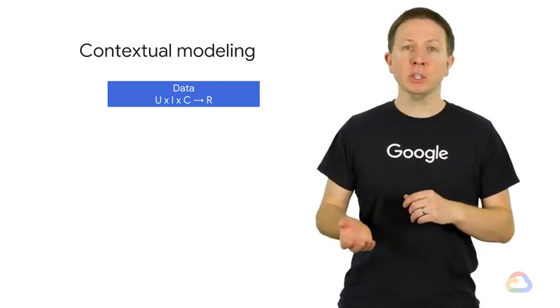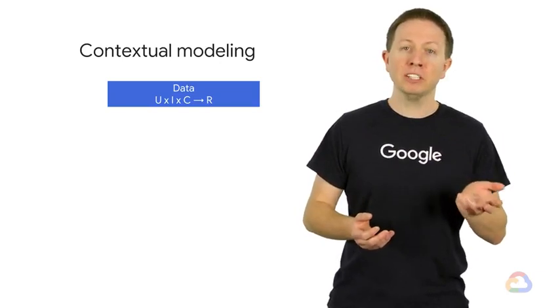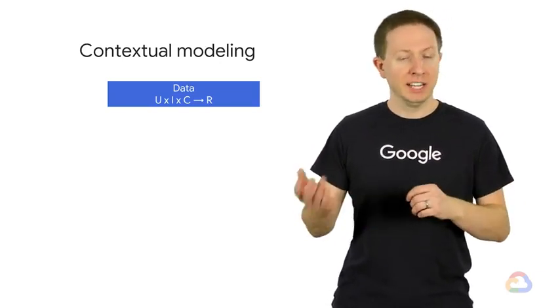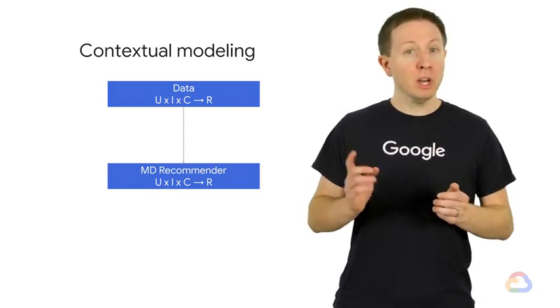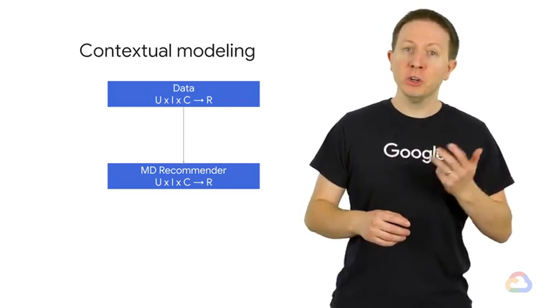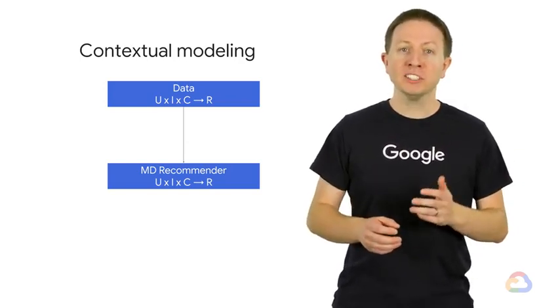Just like the other two types of context-aware algorithms, contextual modeling begins with our user by item by multi-dimensional context tensor containing ratings. This data goes directly to our recommender, but notice this is not our traditional two-dimensional recommender system, but an M-dimensional one where context is a part of our model.